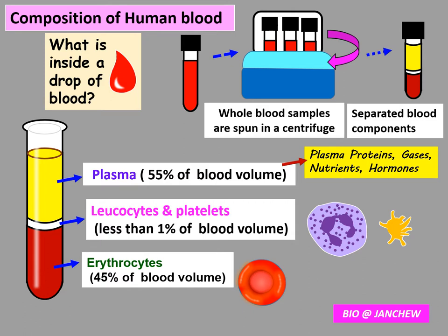What is found inside a drop of blood? If you were to take a whole test tube of fresh blood and spin it in a centrifuge — the machine that rotates the test tubes — the blood will separate out into three main layers. The top layer is pale yellow in color and consists of the plasma, the liquid part of blood, which makes up 55% of the volume of blood.